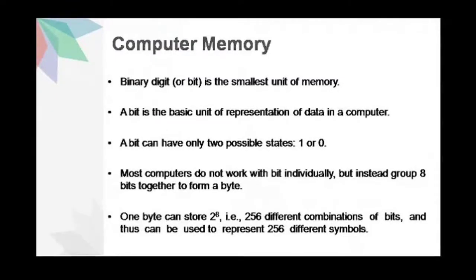Binary digit or bit is the smallest unit of memory. A bit is the basic unit of representation of data in a computer. A bit can have only two possible states: 1 or 0. We may find it useful to think of these in terms of yes and no, or on and off, or true and false, where 1 will be yes, true, or on and 0 would be no, false, or off.